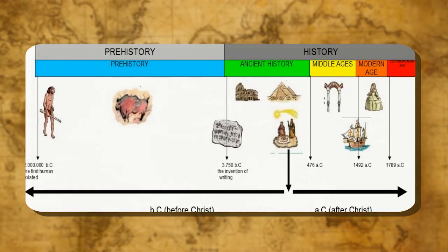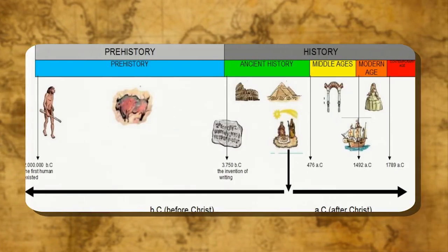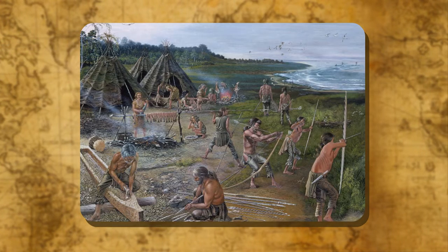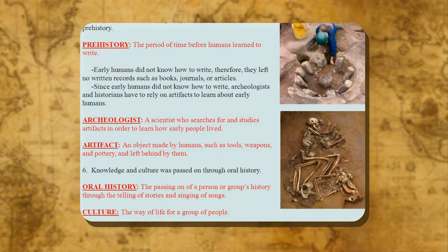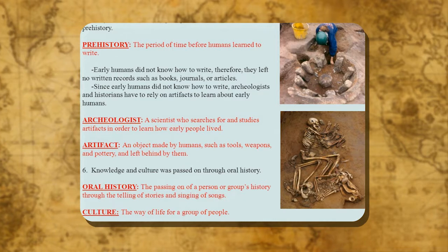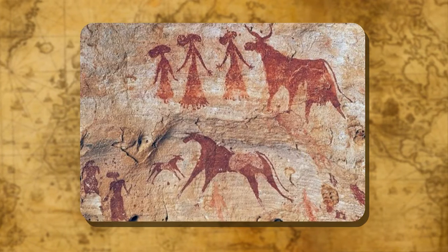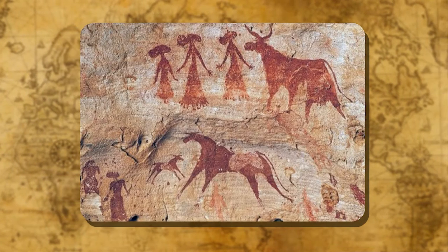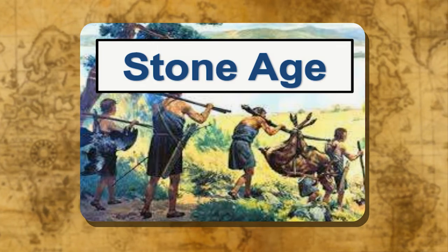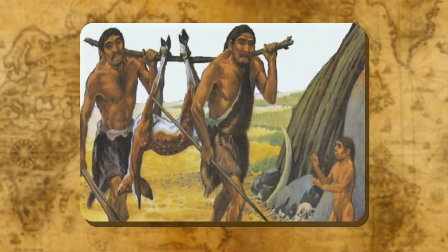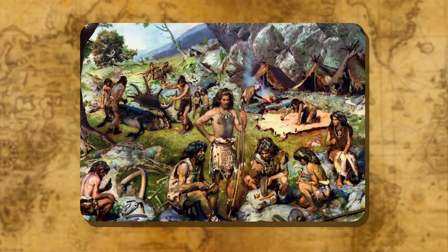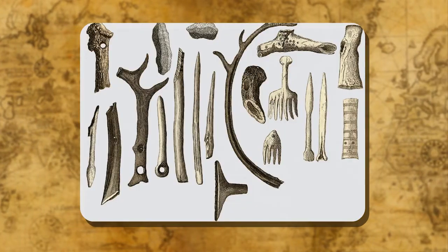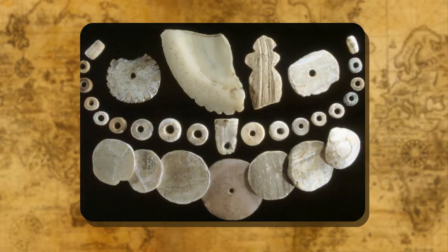The historians divide the past into two broad periods: Prehistory and History. Prehistory is the study of events that happened before humans learned to write, so no written records of that period are available. This period is referred to as the Stone Age. To understand the life of prehistoric man, historians and anthropologists study bones, tools, weapons, ornaments, cave dwellings and cave paintings made by our ancestors.